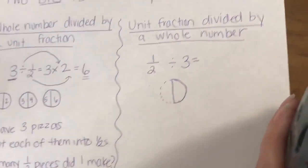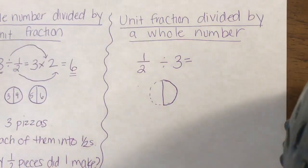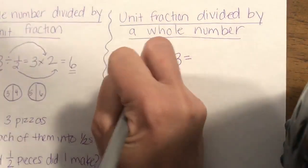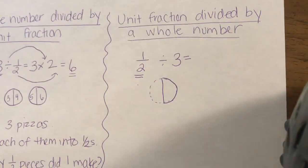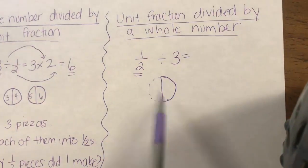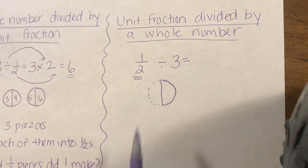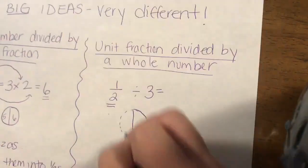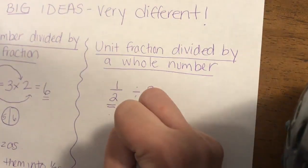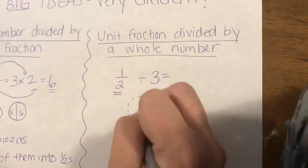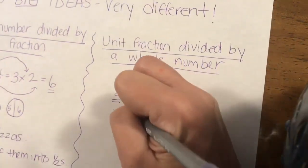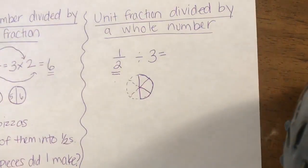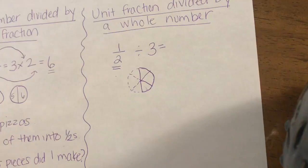Now, flip over to the second idea: a unit fraction getting divided by a whole number. The biggest thing you've got to look at is whatever is first is what is getting divided. Here in my picture I drew only a half of a pizza, and that one half is getting divided by three. Just like any number divided by three, it's getting shared equally by three people or split into three equal parts. I'm going to take this one half and split it into three equal parts. Those look like thirds, but you've got to remember this was a whole pizza — so it's actually cutting it into six.